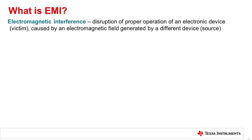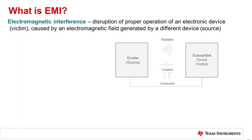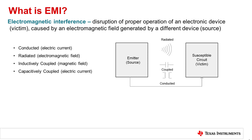EMI stands for electromagnetic interference and describes the disruption of proper operation of an electronic device caused by an electromagnetic field generated by a different device. While EMI describes the disturbance, the source of the disturbance is electromagnetic energy, which is coupled from a source to a receptor or victim through one of four categories.